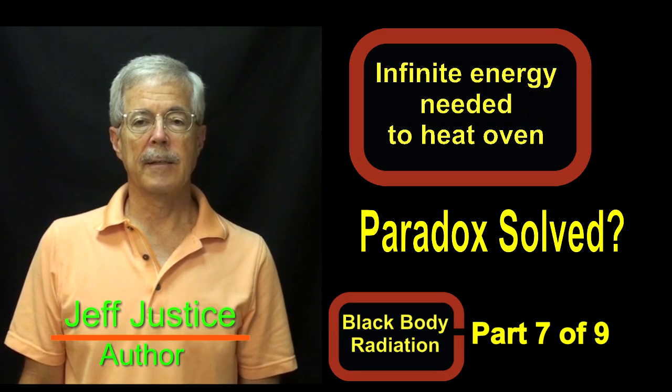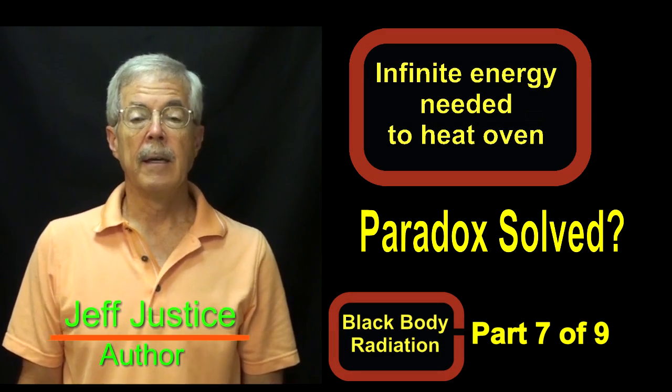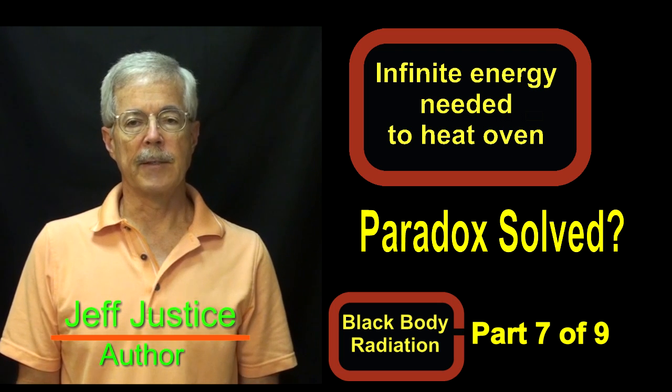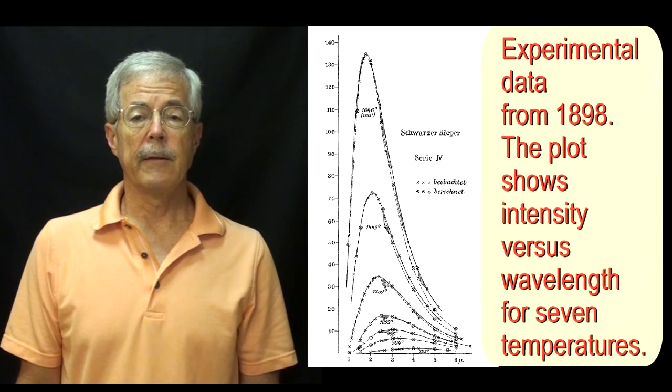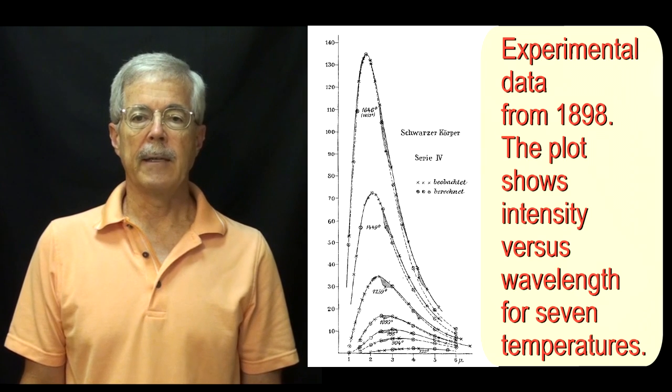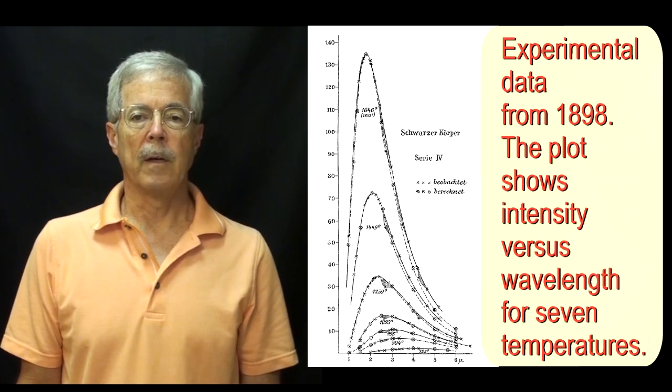The key to resolving a paradox is good experimental data, and by 1890 the experimentalists had many accurate measurements of black body radiation. This allowed the theorists to test various ideas. Max Planck goes down as the man who had the idea that worked.